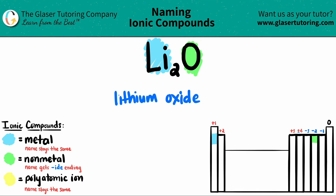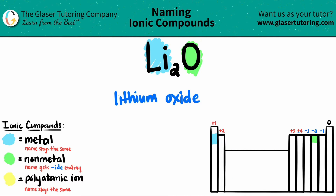And just as a quick last check, lithium is not a transition metal — it's not in here, it's over here on the periodic table — so we don't need a Roman numeral. So our final answer is lithium oxide, and that is the name for Li₂O.